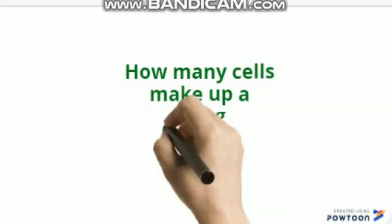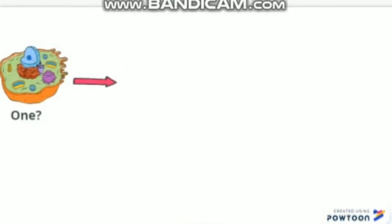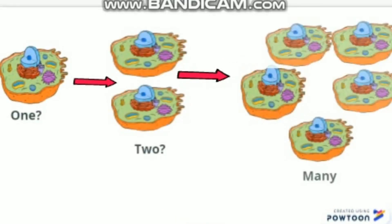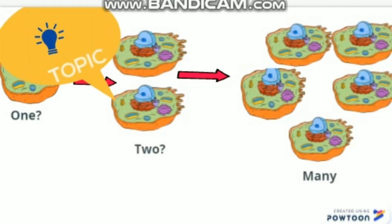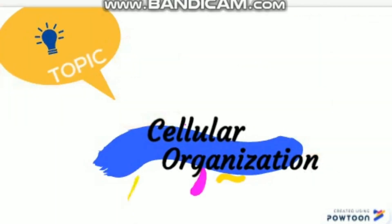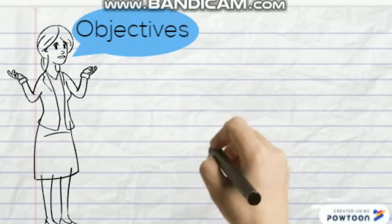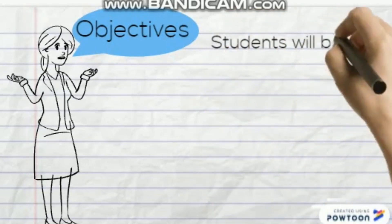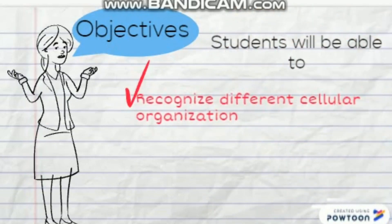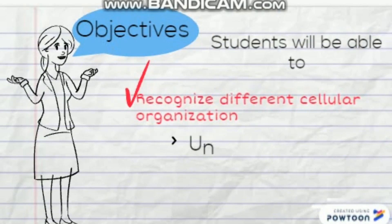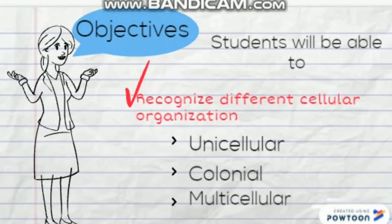How many cells make up the body of a living organism — one, two, or many? This is what we are going to study today. Our topic is cellular organization. Our objectives are: students will be able to recognize different cellular organizations — unicellular, colonial, and multicellular.